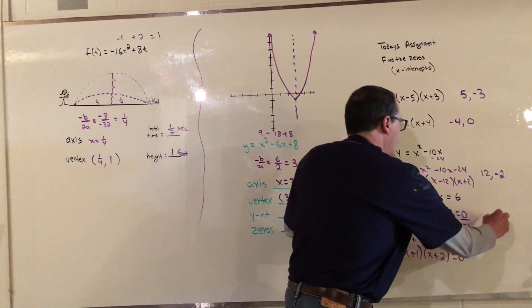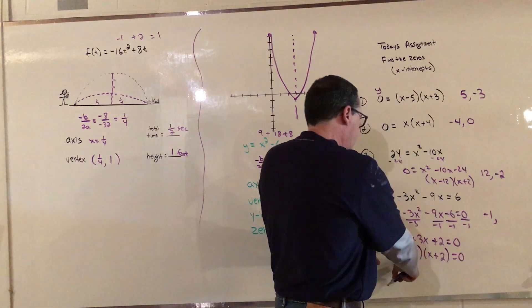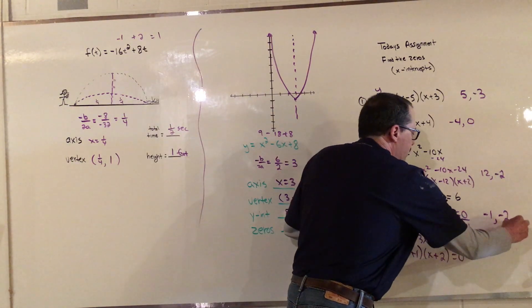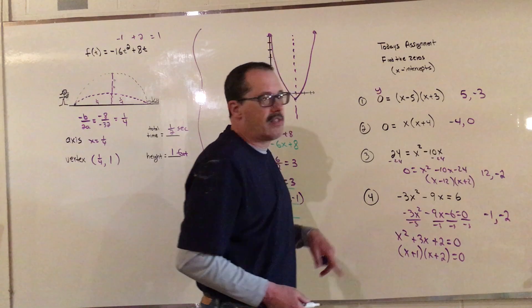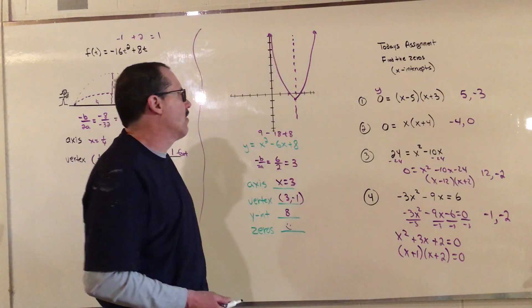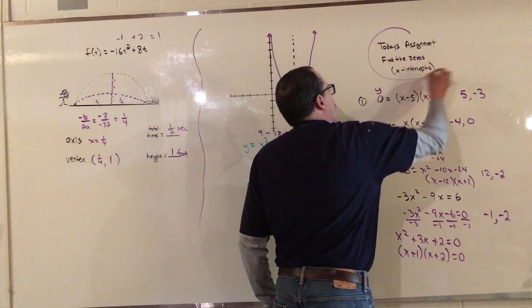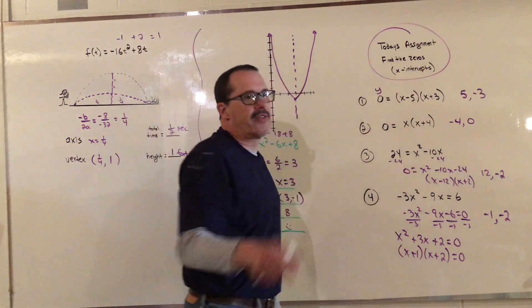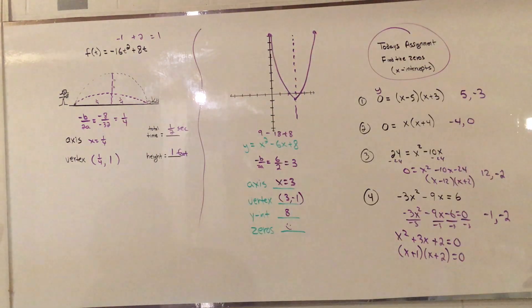So your two zeros are negative 1 to make this 0 and negative 2. All right, so that's today's. I just want you to understand what it is that you're trying to find. You're finding the zeros which are the same thing as the x-intercepts. Have a great day.